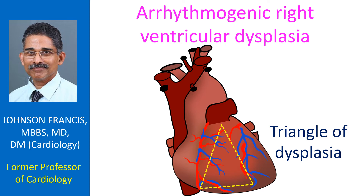In Arrhythmogenic Right Ventricular Dysplasia, myocardium of the right ventricular free wall is replaced by fibro-fatty tissue. Regional wall motion and function is reduced and there is a propensity for ventricular arrhythmias originating from the right ventricle. Sudden cardiac death can occur in the young with ARVD.